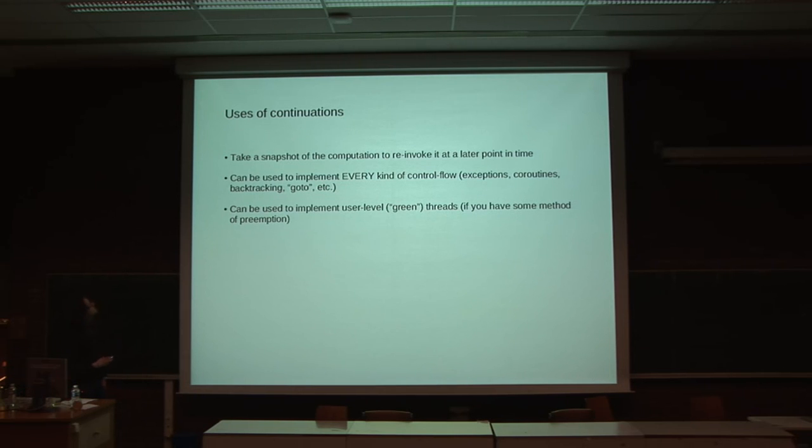How can you use these continuations? You take a snapshot, effectively, of the current state, and by re-entering this state, you can implement every sort of control flow, like exceptions, where you just jump down the stack, like co-routines, where different continuations invoke each other, and backtracking, which retries an alternative branch in a set of possible options, or things like go to, which are just jumps.